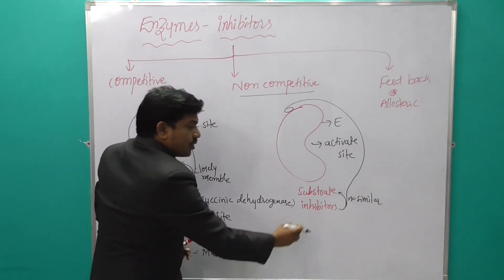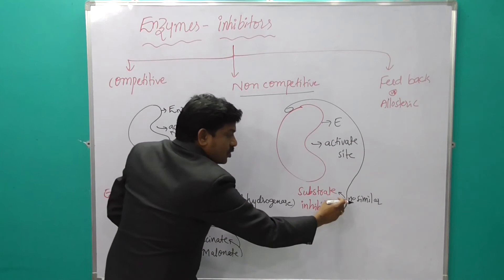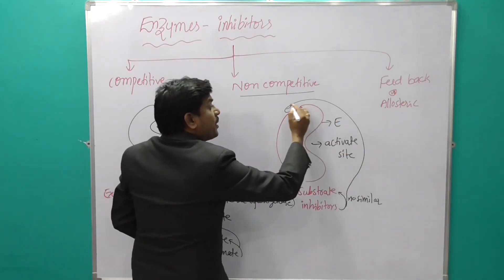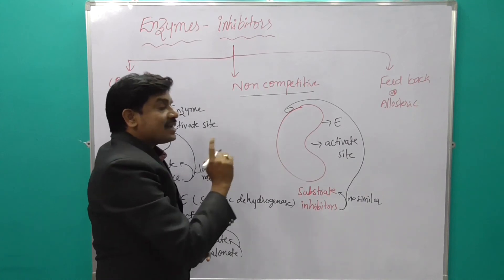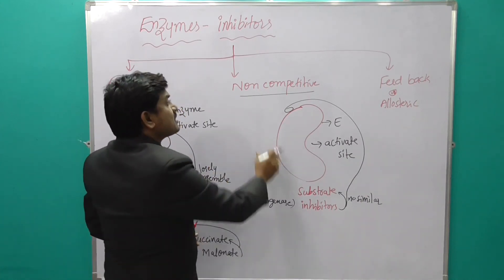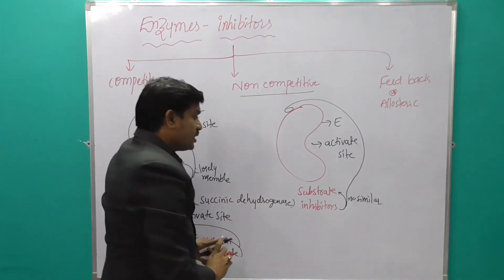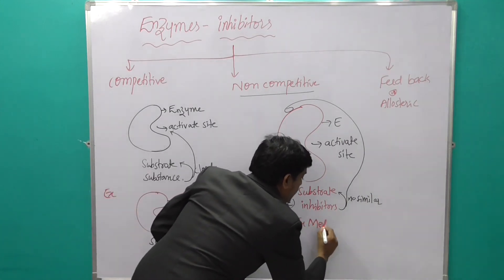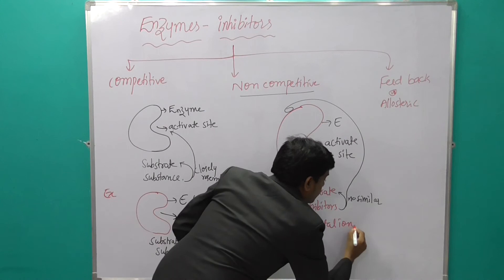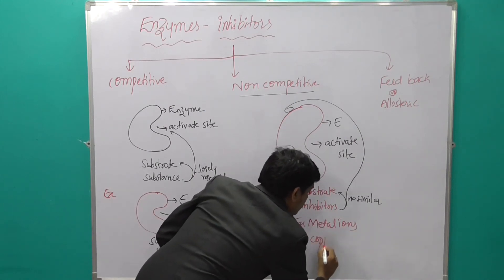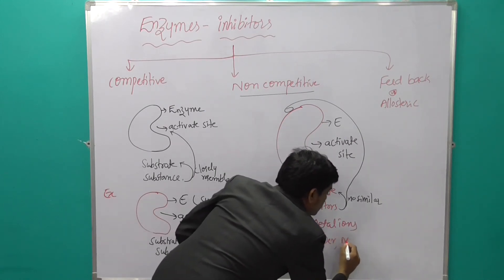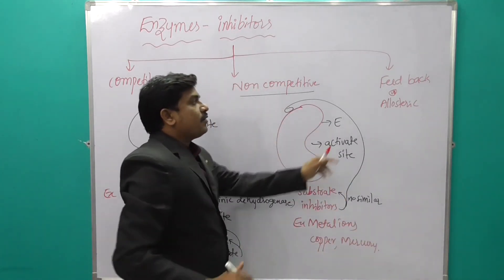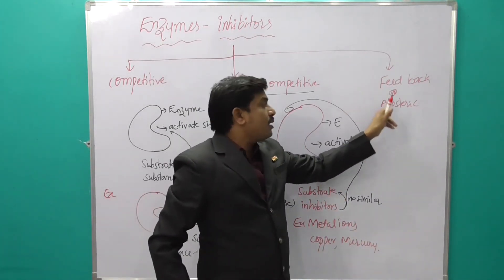So, inhibitors that have no similar structure to the substrate and bind to an enzyme at a location other than the active site are called non-competitive inhibitors. The best examples are metal ions like copper and mercury.